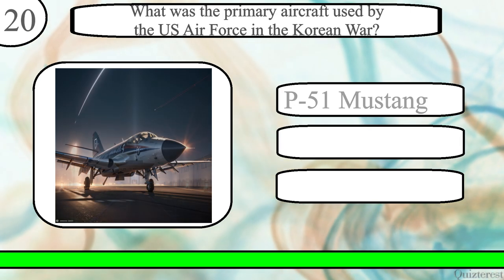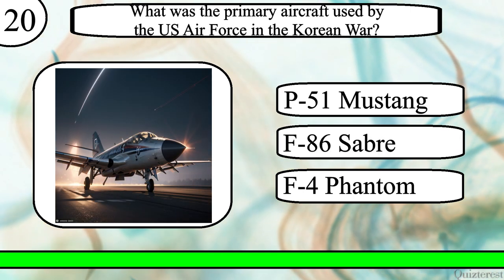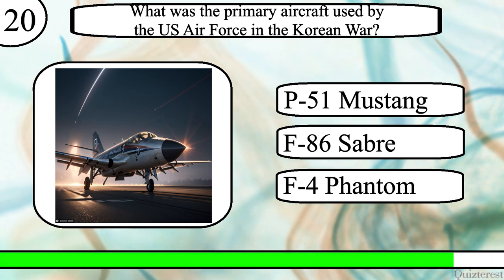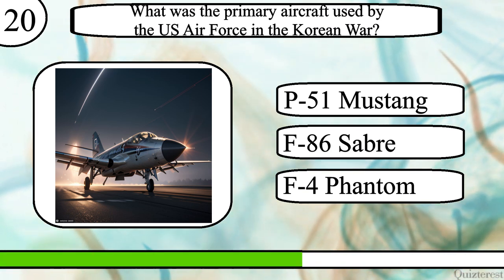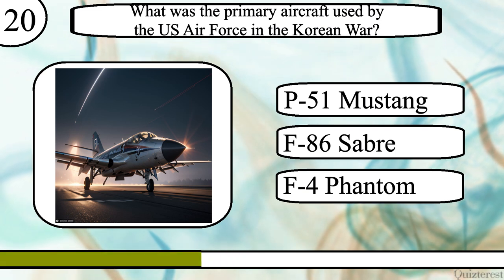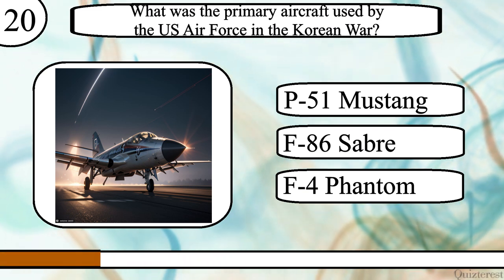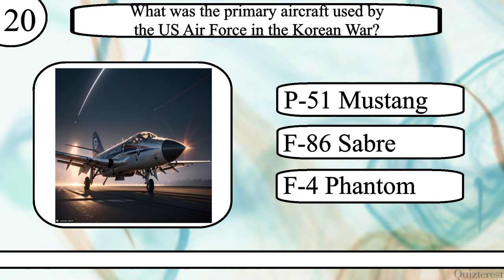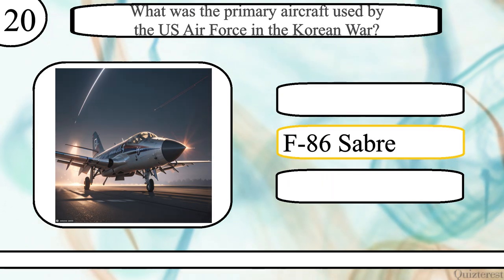Question 20. What was the primary aircraft used by the US Air Force in the Korean War? F-86 Sabre or F-4 Phantom? The correct answer is F-86 Sabre.